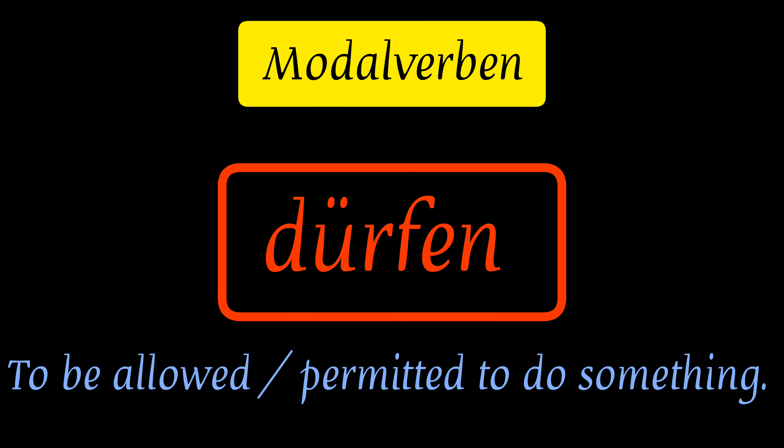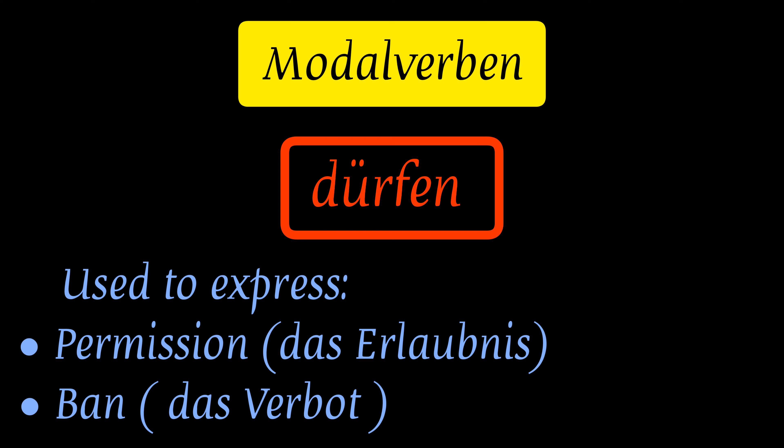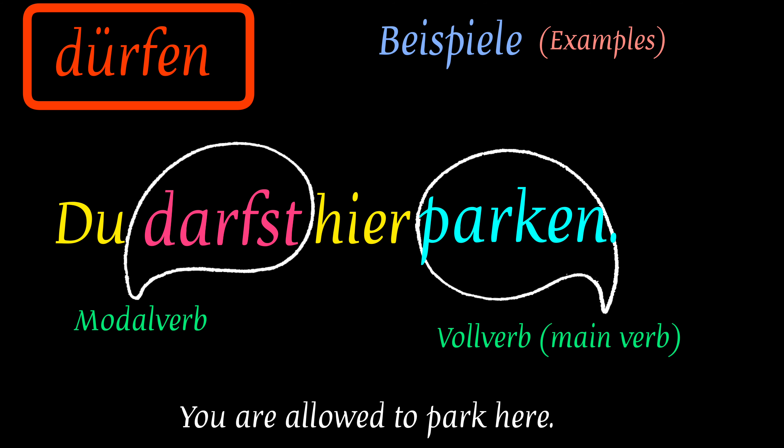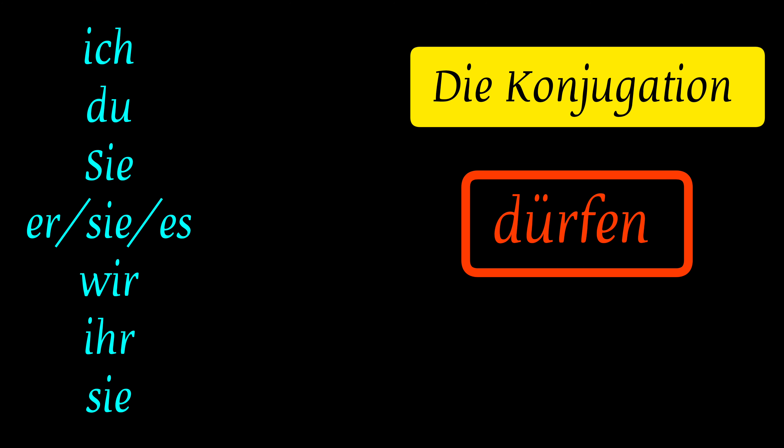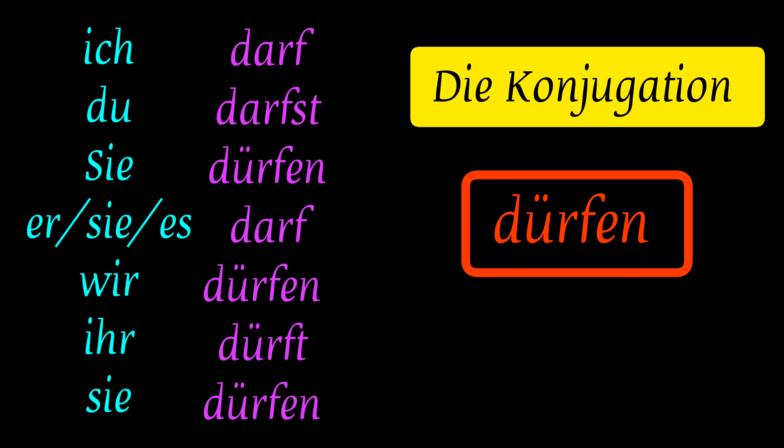Let's learn the meaning of each verb individually. Dürfen means 'to be allowed to do something' or 'to be permitted to do something.' With this verb one can express permission — das Erlaubnis — or a ban on something — das Verbot. For example: 'Du darfst hier parken' and 'Im Flugzeug darf man nicht rauchen.'